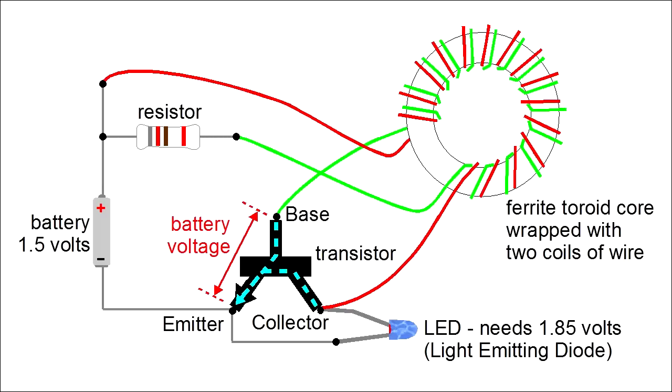And, if you look closely at the circuit, you'll see that if electricity is flowing between the collector and emitter, that means it's also flowing through the red coil. What about the LED? In order for the LED to light up, it needs a certain minimum voltage, 1.85 volts in this example. Since we have only a 1.5 volt battery, the LED doesn't light up. Yet.